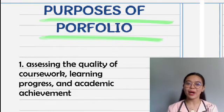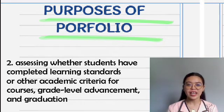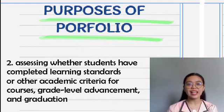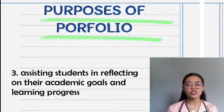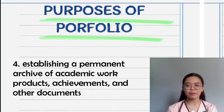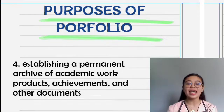First, assessing the quality of coursework, learning progress, and academic achievement. Second, assessing whether the students have completed learning standards or other academic criteria for courses, grade level advancement, and graduation. Third, assessing students in reflecting on their academic goals and learning progress. And fourth, establishing a permanent archive of academic work, products, achievements, and other documents.